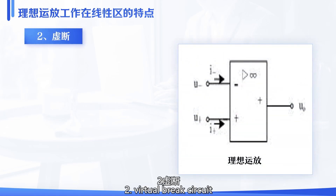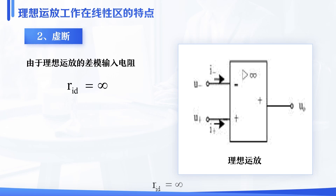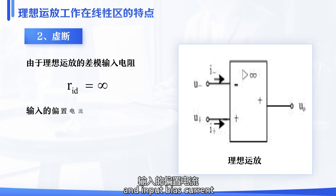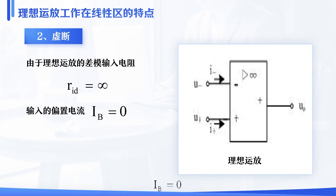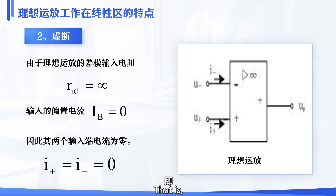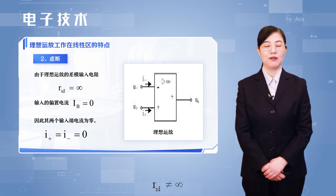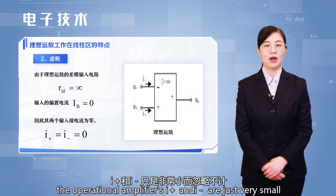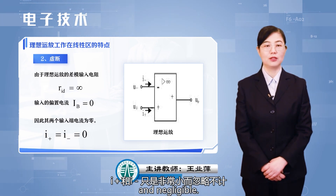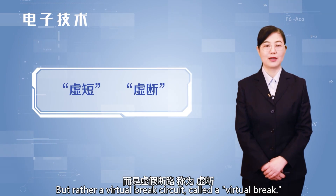2. Virtual break circuit: due to the ideal operational amplifier's differential mode input resistance R_id equal to infinity, and input bias current Ib equal to 0, the current at its two input ends is 0. That is, I+ equal to I− equal to 0. It's as if these two points are disconnected. But in reality, R_id is not equal to infinity — the operational amplifier's I+ and I− are just very small and negligible. So it is not a real open circuit, but rather a virtual break circuit, called a virtual break.